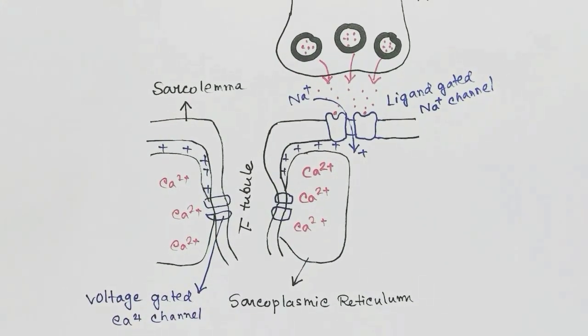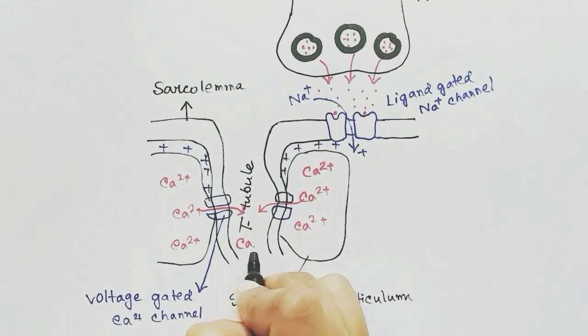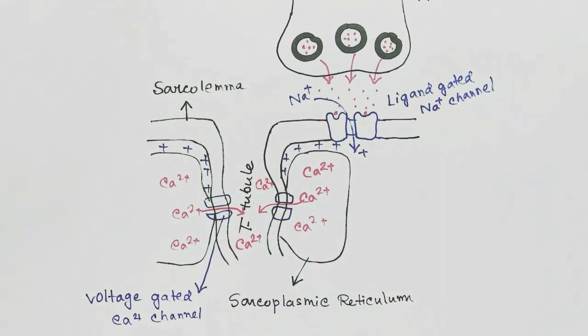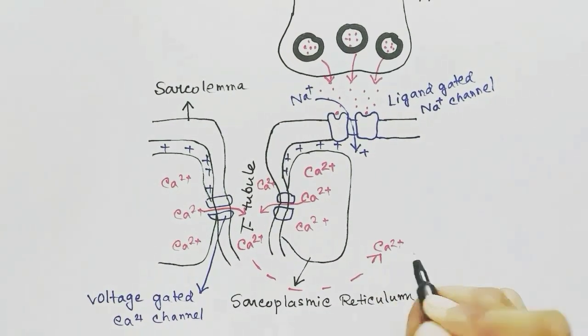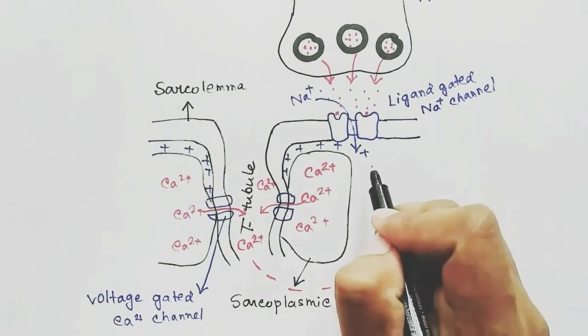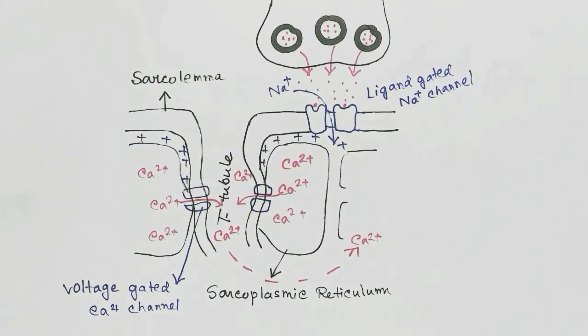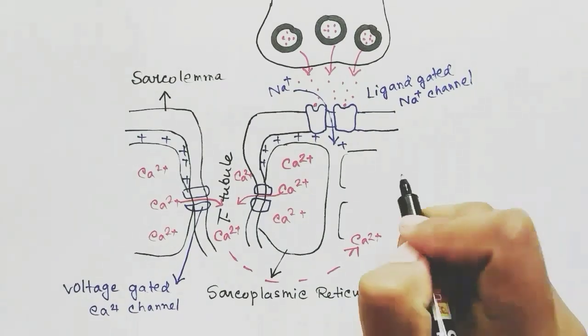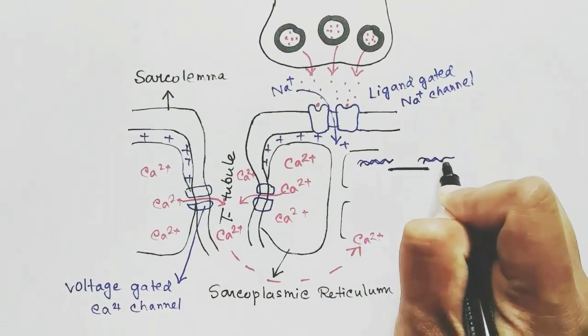Calcium comes into the T-tubule and is carried to other parts of the muscle where there are thick filaments and thin filaments. These calcium ions attach where needed to operate or contract the muscle.